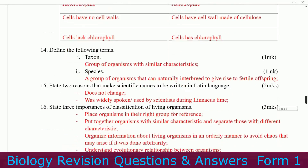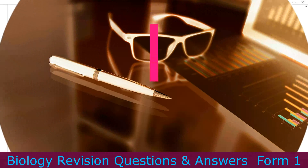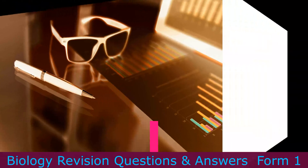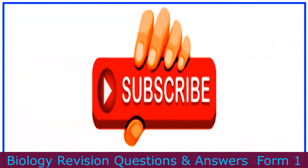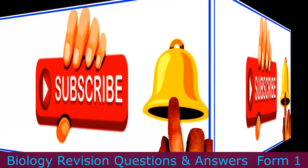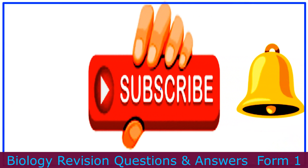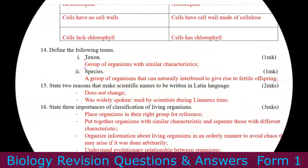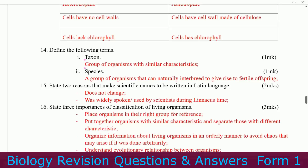Number fourteen: define the following terms. Taxon — a group of organisms with similar characteristics. Species — a group of organisms that can naturally interbreed to give rise to fertile offspring.